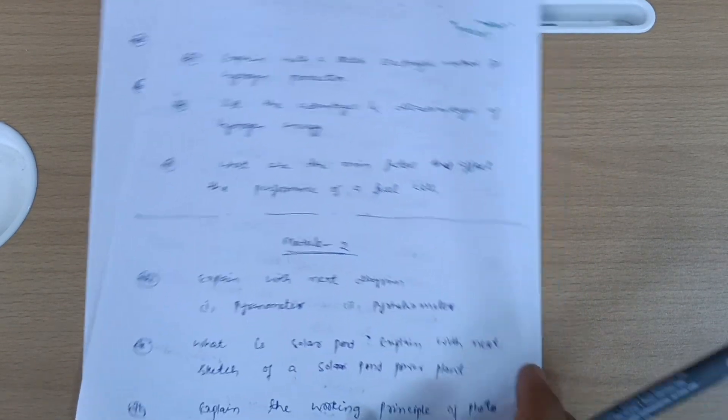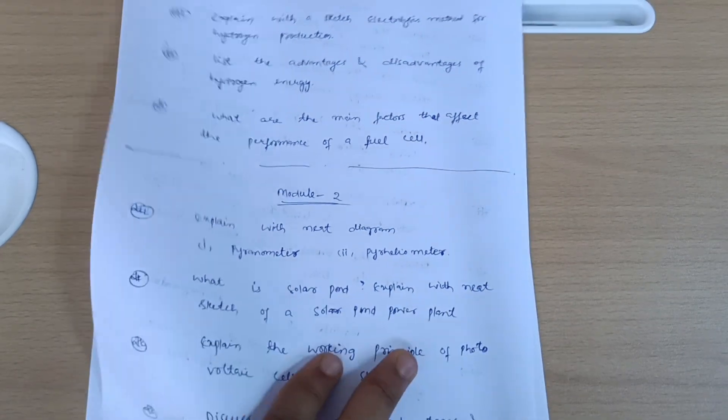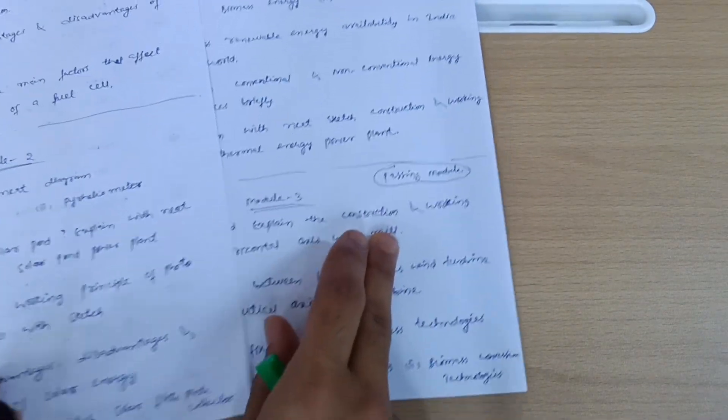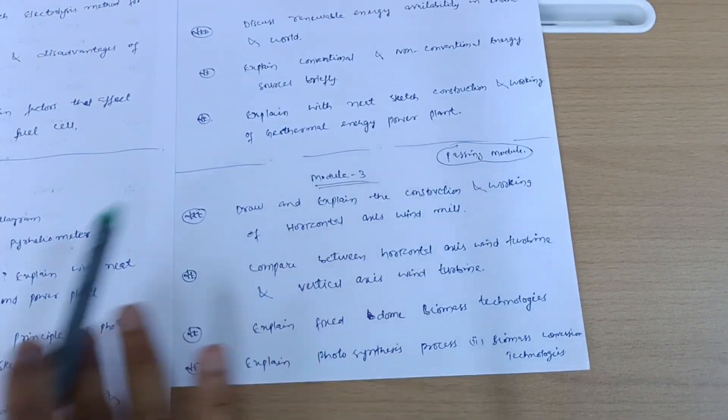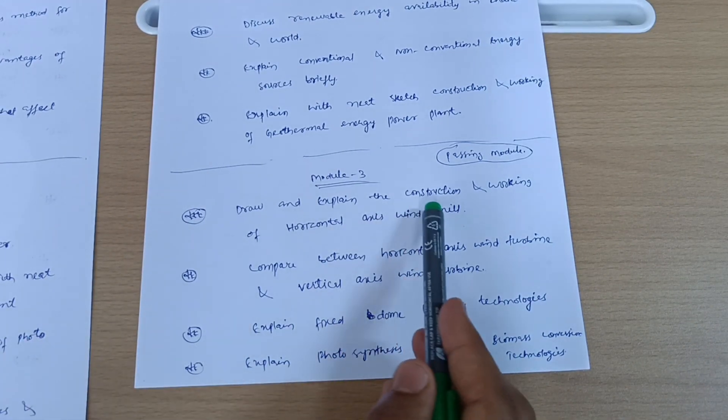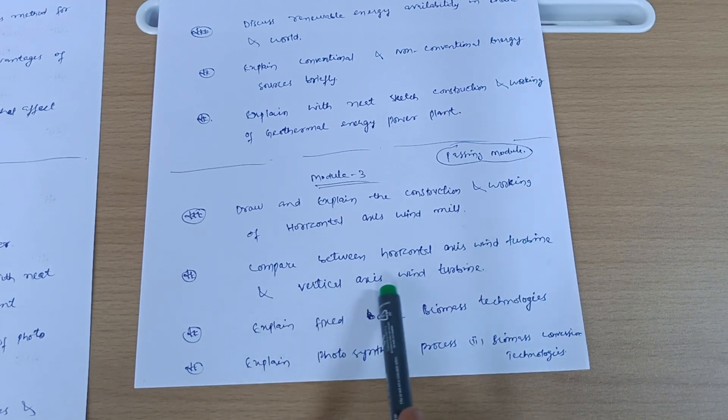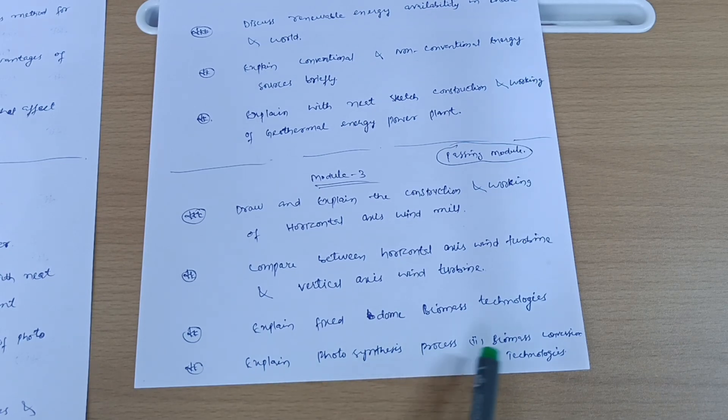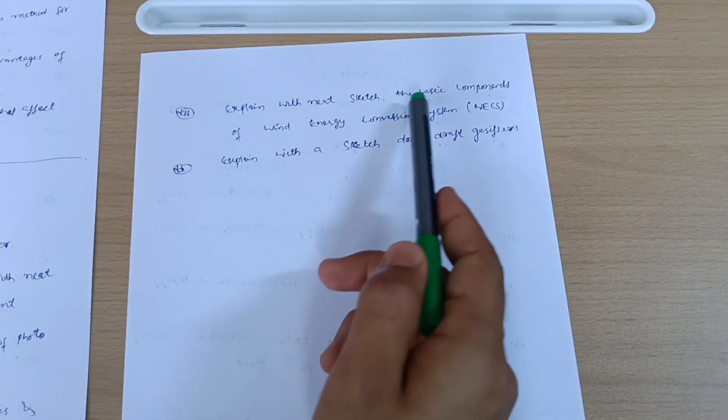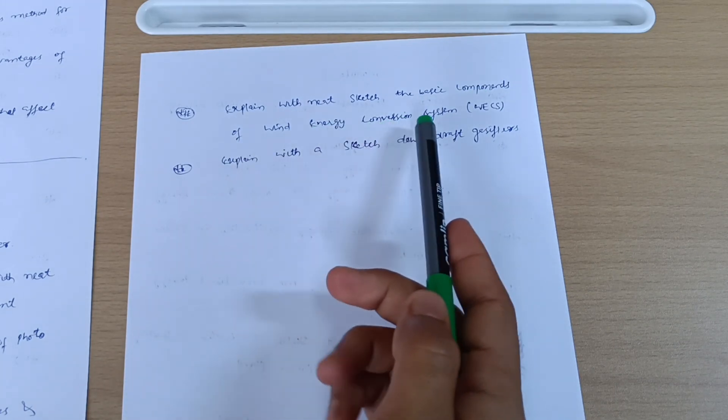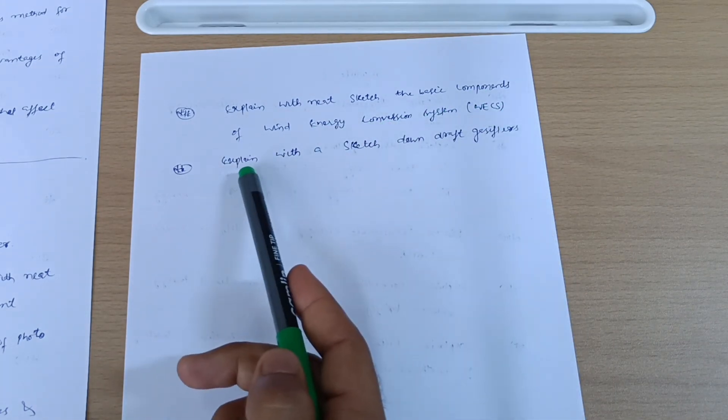Next is Module 2. First of all, let me discuss the passing module. Draw and explain the construction and working of horizontal axis windmill. Compare between horizontal axis wind turbine and vertical axis wind turbine. Explain fixed dome biomass technologies. Explain photosynthesis process and biomass conversion technologies. Explain with neat sketch the basic components of wind energy conversion system WECS.